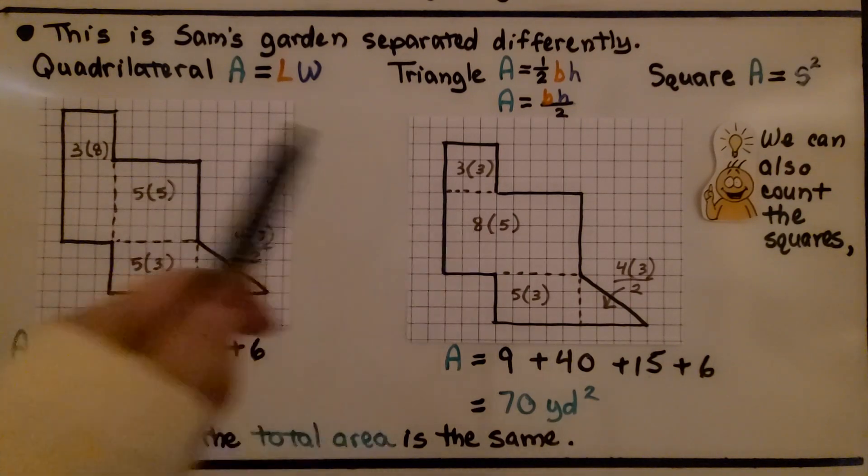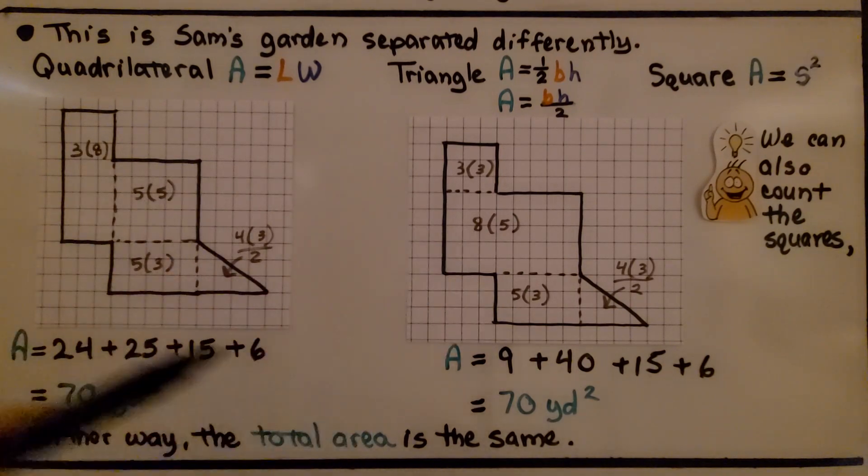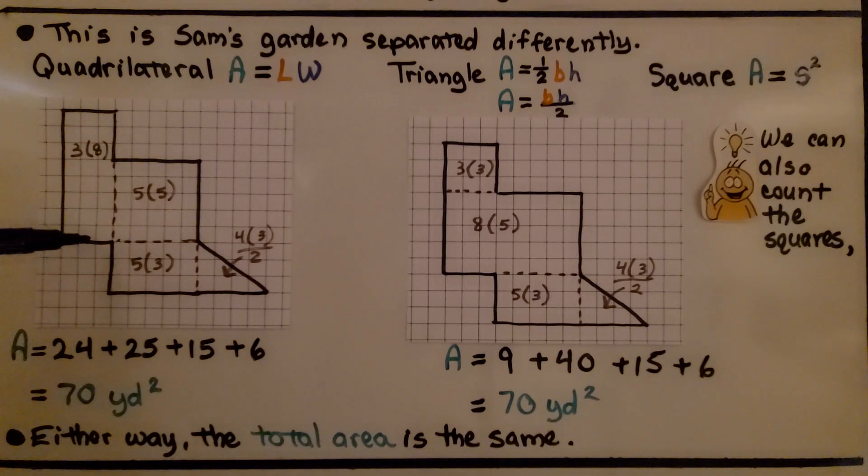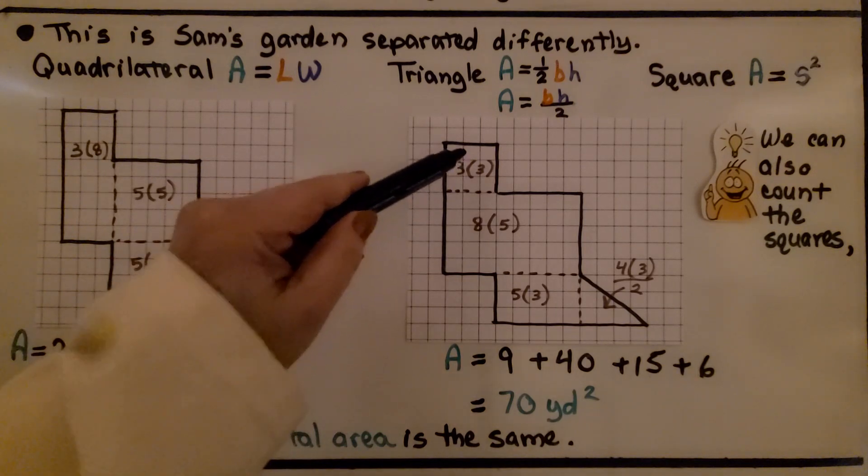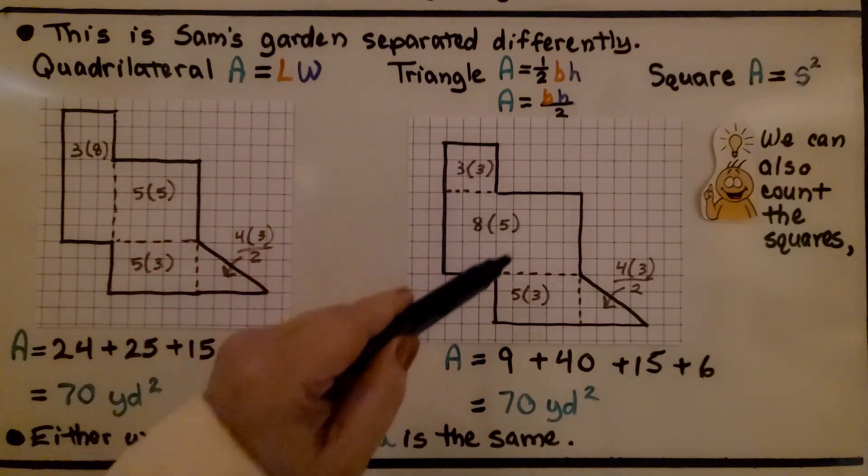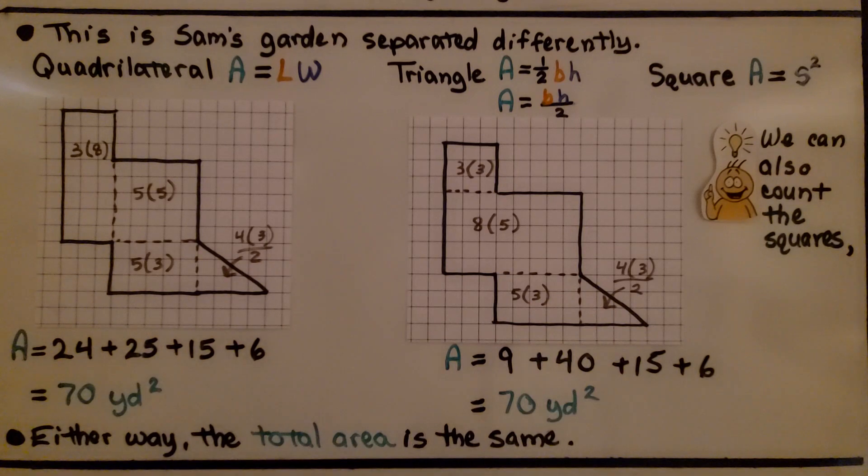This is Sam's garden separated differently. Here, we've got a long rectangle, a square, a rectangle, and a triangle. Here, we have a little square, a bigger rectangle, a smaller rectangle, and a triangle.